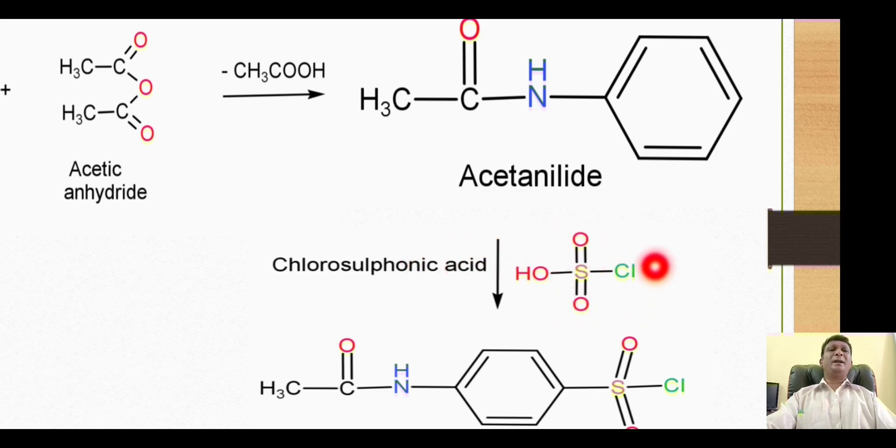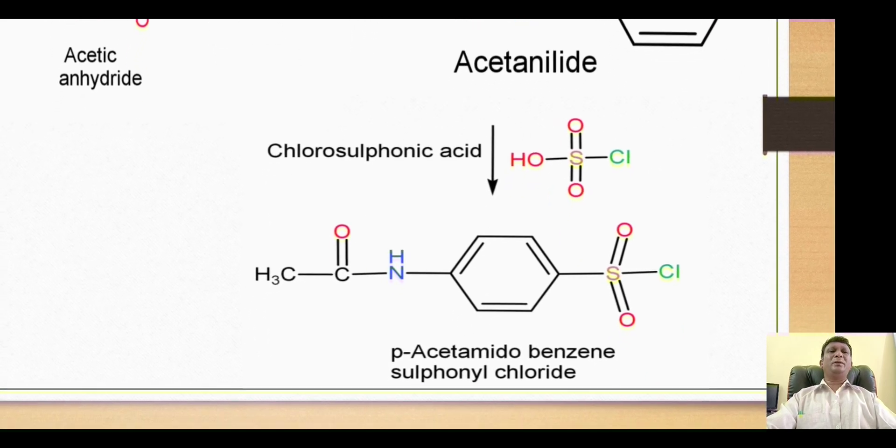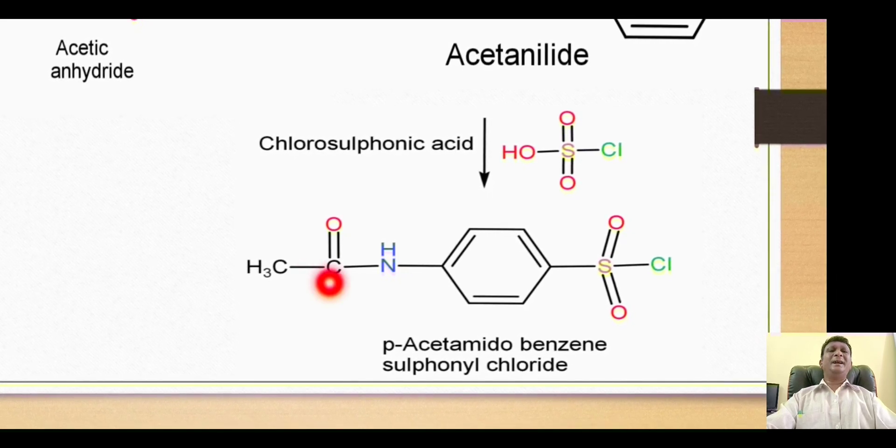The sulfonyl chloride group then gets attached at the para position. This gives us formation of this derivative, which is called para-acetamidobenzene sulfonyl chloride.